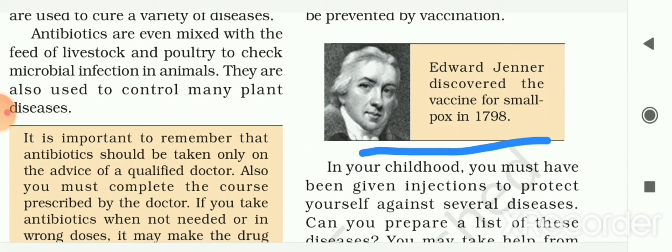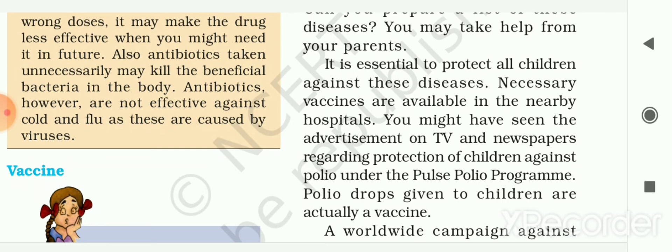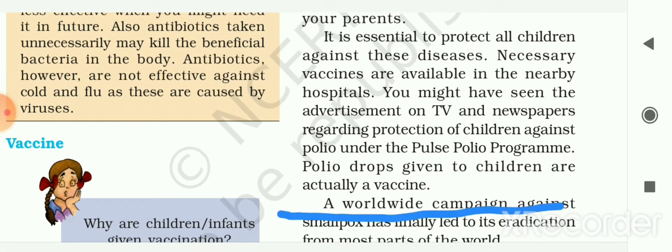Edward Jenner discovered the vaccine for smallpox in 1798. In your childhood, you must have been given injections to protect yourself against several diseases. You might get vaccinations for diseases like diphtheria, chickenpox, mumps, whooping cough, measles, rubella, hepatitis A, etc. You can make your own list. It is essential to protect all children against these diseases, and necessary vaccines are available in nearby hospitals.